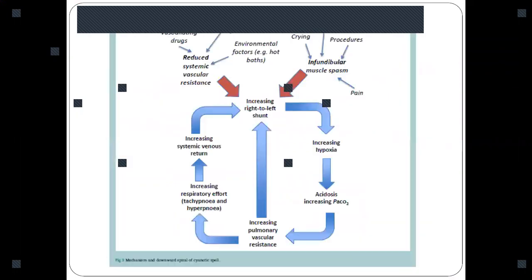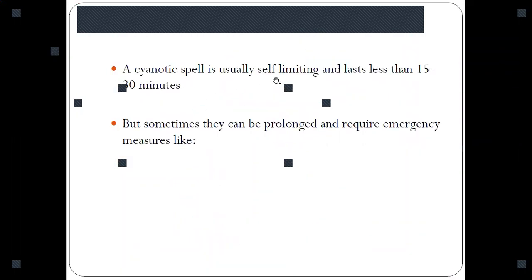Now, what are the various methods for reduction of cyanotic spells? Cyanotic spells are usually self-limiting and last less than 15 to 30 minutes, but sometimes they can be very prolonged and may require emergency measures.